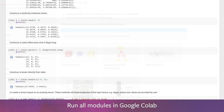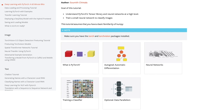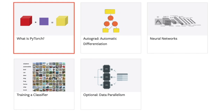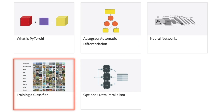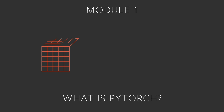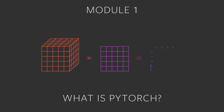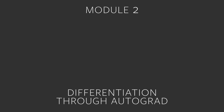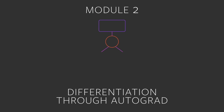Now let's take a look at the topics we'll cover in the blitz. The tutorial is broken out into four different modules. In the first module, What is PyTorch?, you'll learn the fundamental technical details of PyTorch, such as tensors and multiple syntaxes of operations. In the second module, you'll learn about automatic differentiation through a PyTorch package called Autograd.